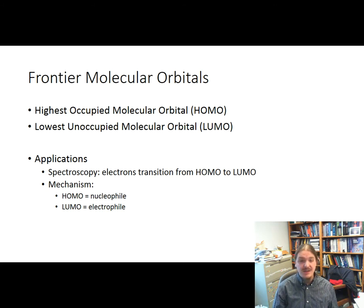Electrons transitioning between the HOMO and the LUMO are responsible for the energy differences observed when conjugated molecules absorb ultraviolet or visible light. Also, to help understand the mechanism and behavior of chemical reactions, organic chemists who specialize in this area can learn something about the nucleophilic behavior of a molecule based on its HOMO and something about the electrophilic behavior of a molecule based on its LUMO.